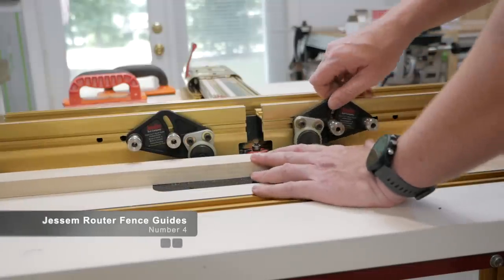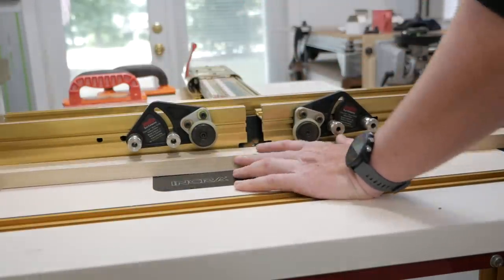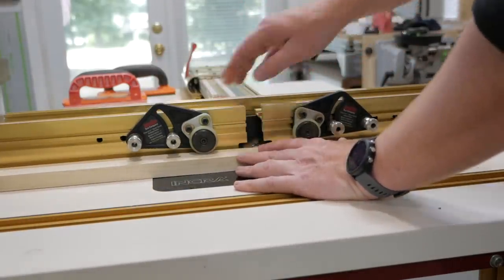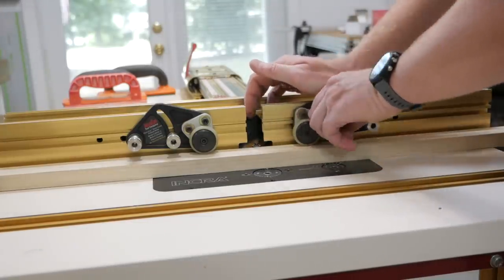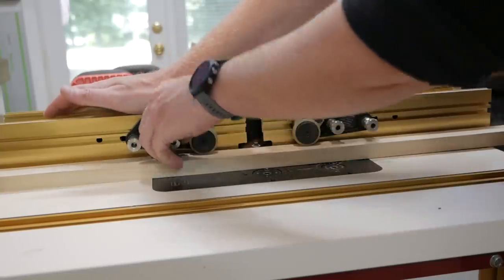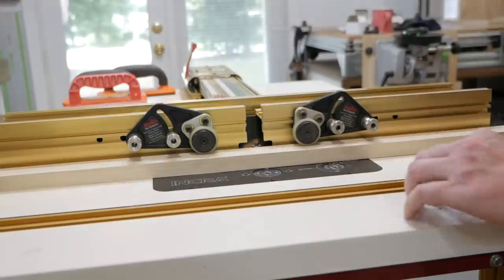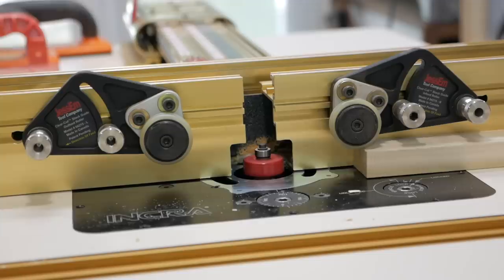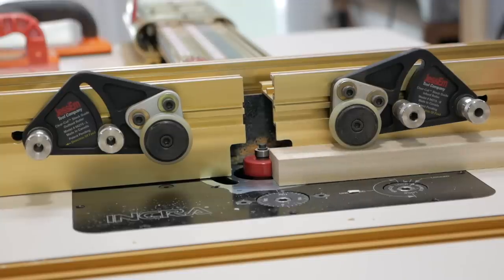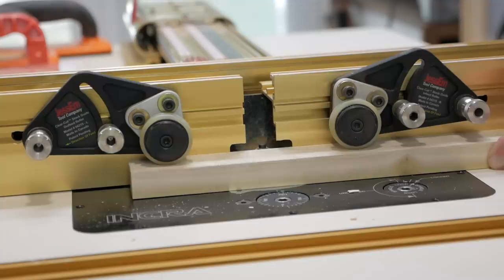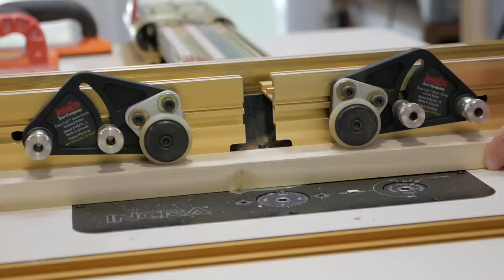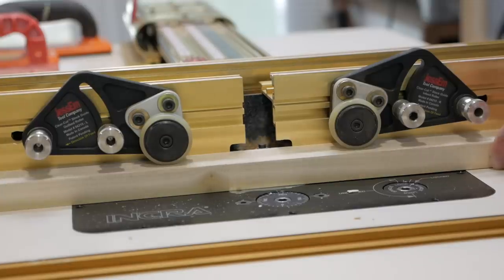The next item are the Jessem router fence guides. These are very similar to what I use on my table saw. Same company and kind of the same principle as how they operate. If you want to find out more about the ones I have for my table saw, I'll leave a video here now. Essentially what these are is replacing the need for featherboards because they do two things. As you can see here, they're applying downward pressure onto the workpiece while also pulling the workpiece into the fence because of the rollers. The other great feature is that the rollers do not allow the material to move back. They're a great addition, makes using a router table much safer.